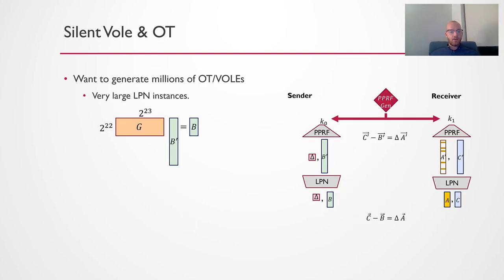So drilling into this LPN instance, in particular we want to generate say a million or many millions of OTs or VOLs. This means that the LPN instance will be very large. So if we want four million OTs, then our G matrix here will be four million by eight million, for example. For classic LPN, this corresponds to this G matrix being uniformly random. Therefore the multiplication would be quadratic time, taking roughly two to the power 40 in time, which is clearly impractical if we're going for extremely high performance.